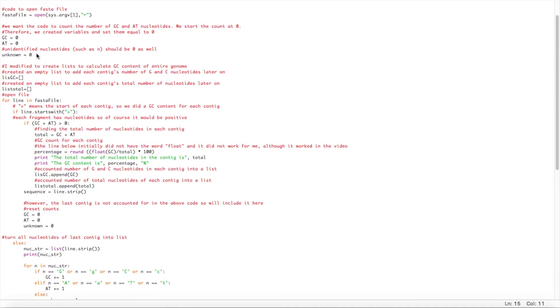I then found the amount of guanine and cytosine and total number of nucleotides for each contig except for the last sequence. I then turned the number of guanine and cytosine for each contig into a list called list total.